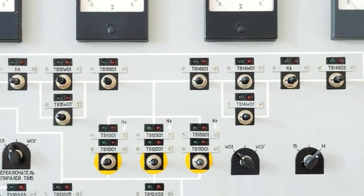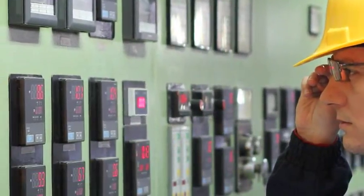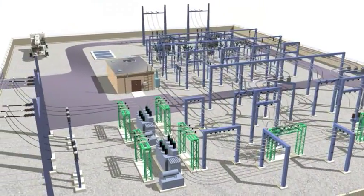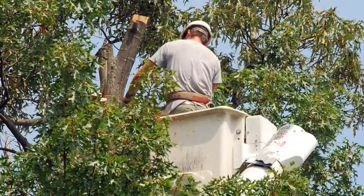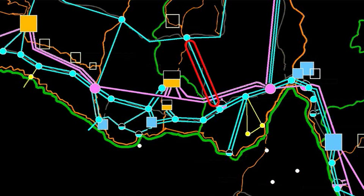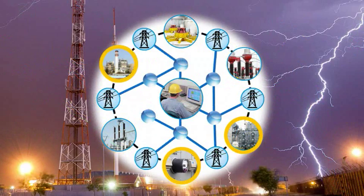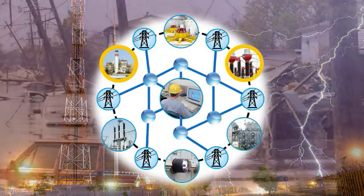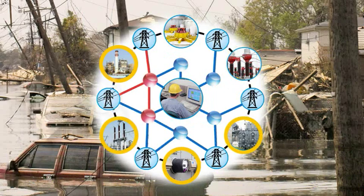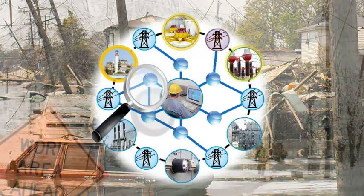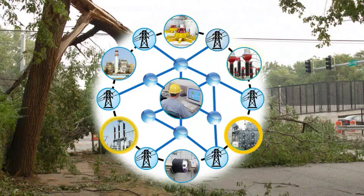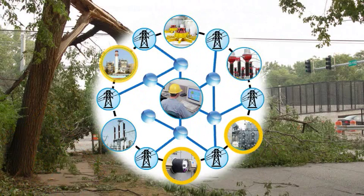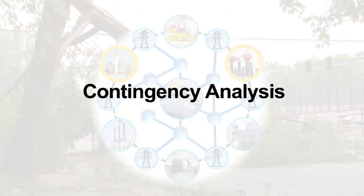Power grid operators must continually adjust the grid to make sure the right amount of electricity gets to the right places. Something as simple as a power line touching a tree can disrupt other parts of the grid, leading to power grid failures. Operators look at the various scenarios of what could happen and how they could handle it. In real-time power grid operation, this process is called contingency analysis.